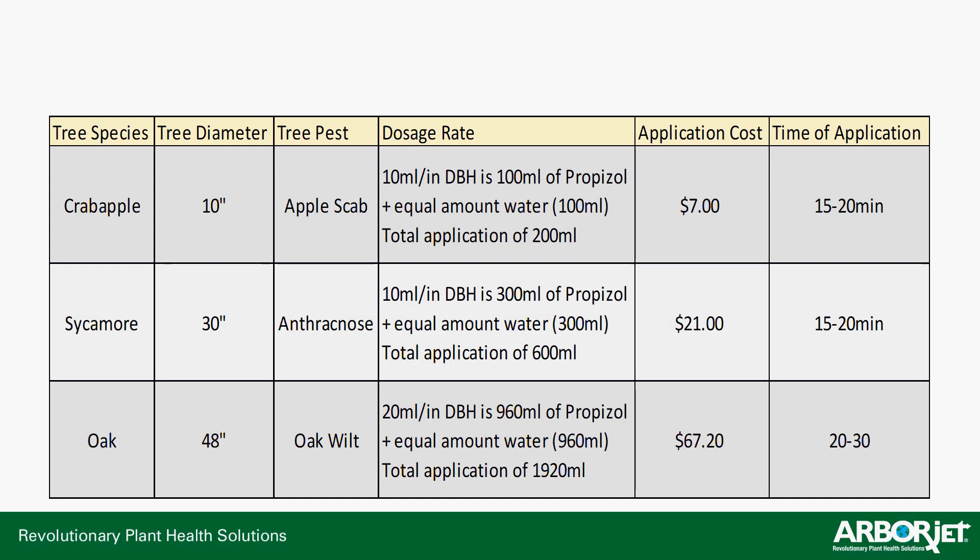Looking at a few sample applications — a couple at the low rate and one at the high rate. For a 10-inch crab apple with apple scab, we're going to use the low rate, which is 10 milliliters per inch diameter. So 10 milliliters per inch means 100 milliliters total of propiconazole, mixing that at a one-to-one ratio with water. The total application is going to be 200 milliliters of solution. That's going to cost about $7 and should take about 15 to 20 minutes.